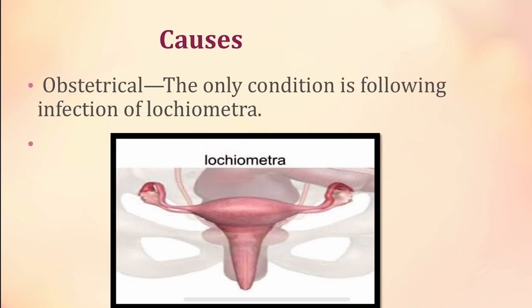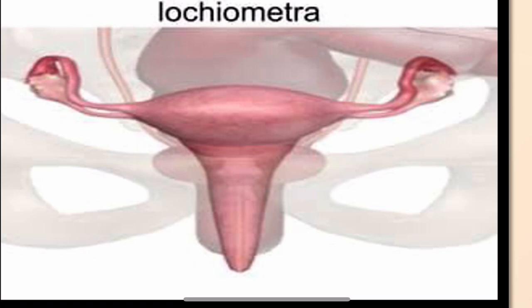Causes — Obstetrical. The only condition in which pyometra is observed is lociometra. Lociometra is the accumulation of lochia inside the uterine cavity causing abnormal distension of the uterus. You can see the uterus being distended here. This is the condition in which pyometra is observed.